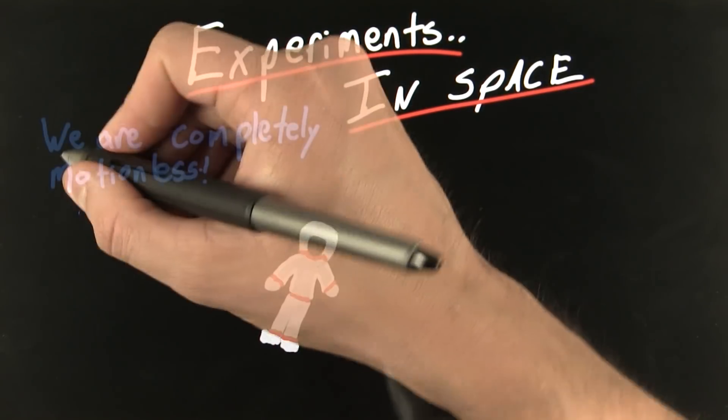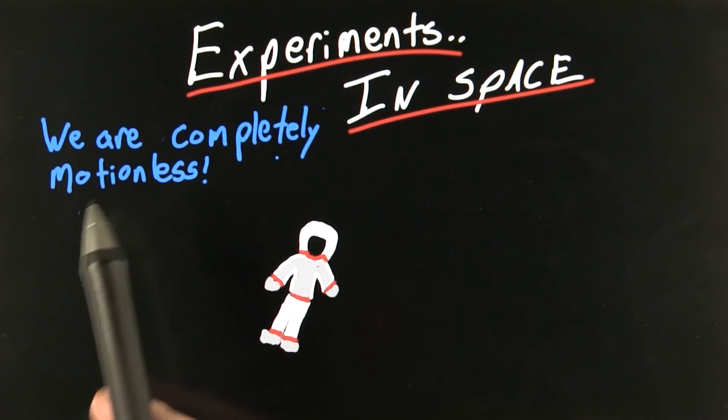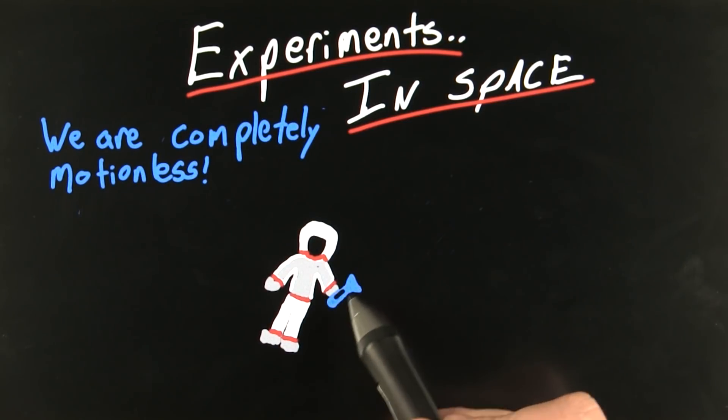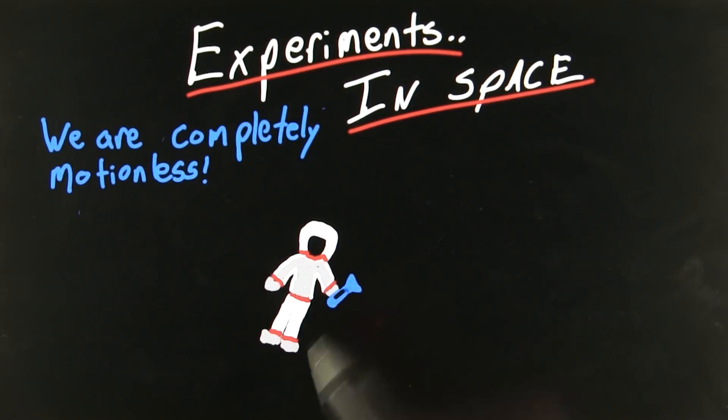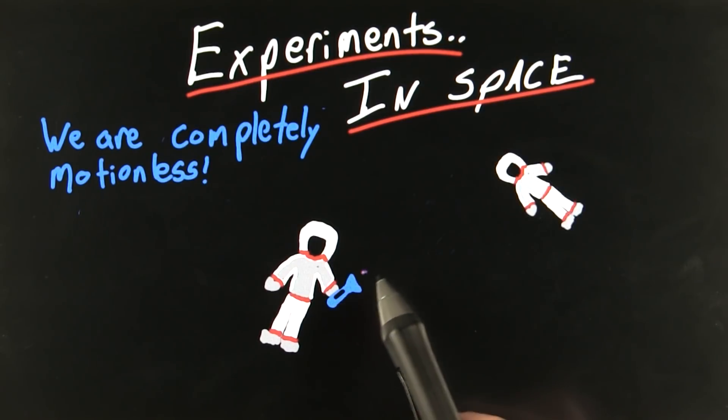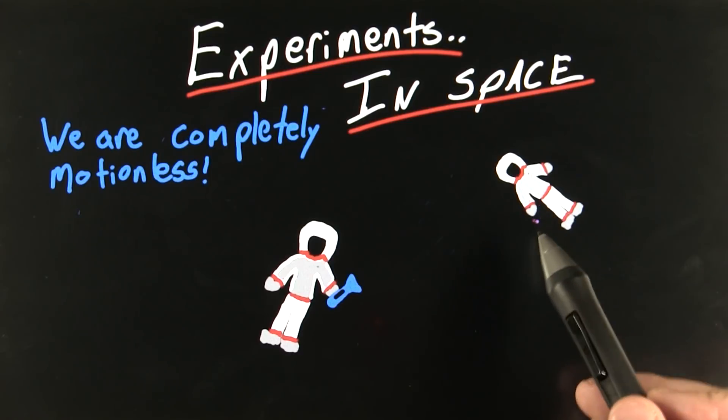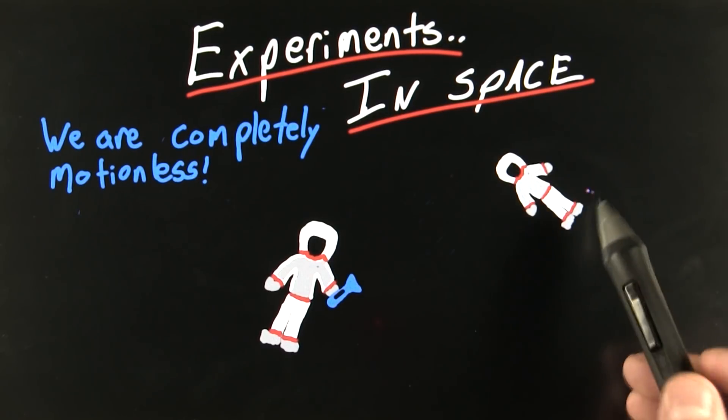Now, as far as we can tell, we are completely motionless. Now, let's say you turn on your flashlight, because every good scientist floating in the depths of space remembers to bring their flashlight. You turn on your flashlight, and off in the distance, you see another astronaut floating in the depths of space.